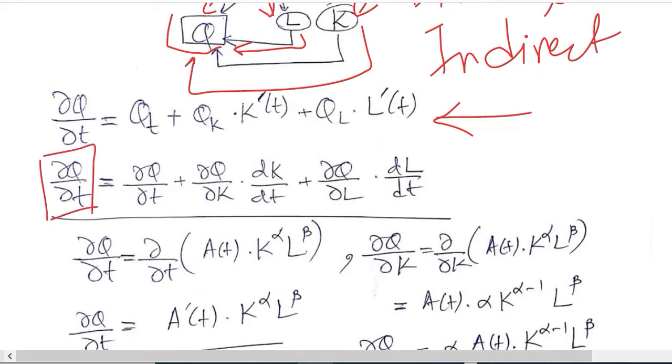The effect of time on output is basically the sum of these three values. Firstly, the output gets affected directly over time. Secondly, time improves capital and capital then contributes to output. Thirdly, time improves labor and labor then affects the output. So all the sources are then summed up.